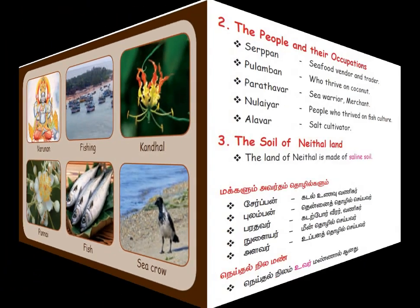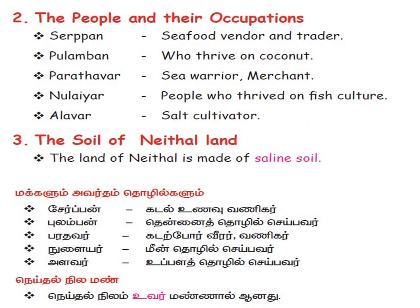Now we will see the people and their occupations. The first was Serpen, a seafood vendor and trader who sold seafood like fish and prawns. The next was Pulamban — P-U-L-A-M-B-A-N — who thrived on coconuts. Since it was seashore, there were plenty of coconut trees, and Pulamban climbed the coconut trees to collect and sell coconuts.